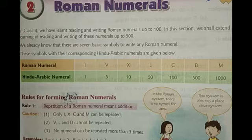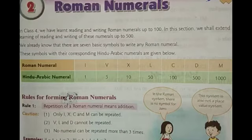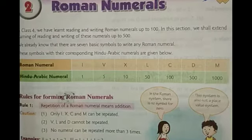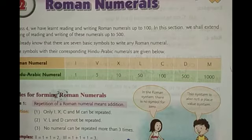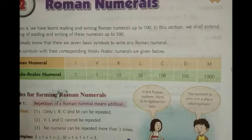The Roman Numeral symbols with their corresponding Hindu-Arabic numerals are given below. We represent 1 with I, 5 with V, 10 with X, 50 with L, 100 with C, 500 with D, and 1000 with M. Remember this chart — according to this chart we can write and read Roman Numerals.